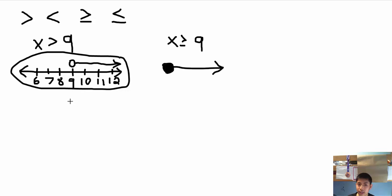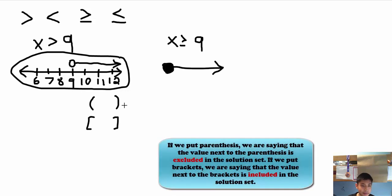Now x is greater than 9 we can write that in interval notation. But first we have to understand parentheses and brackets, what they mean and what they represent. Parentheses means not including the value that it's next to. Brackets means the opposite, it includes it.